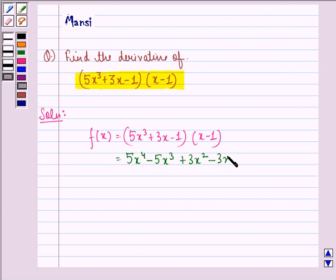-1 into x is -x, -1 into -1 is +1. This is same as 5x⁴-5x³+3x². Now -3x-x is -4x+1. Now we find out f'(x).